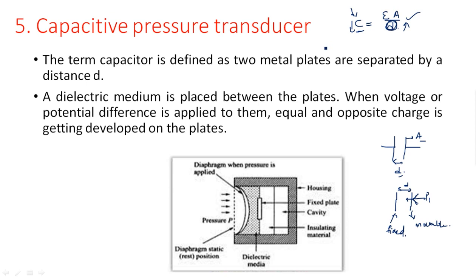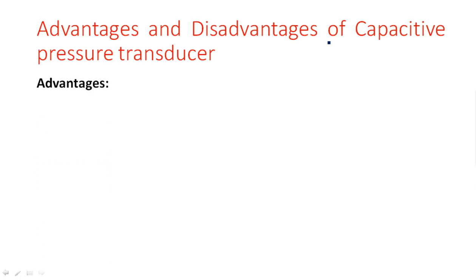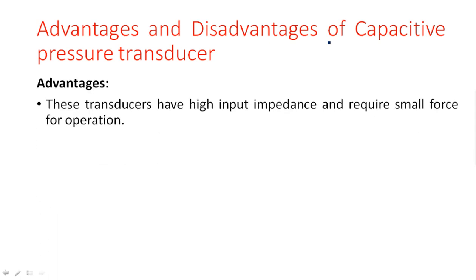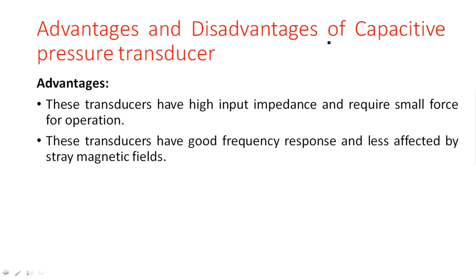Advantages of capacitor transducer: these transducers have high input impedance and require very small force for operation, as the plate movement is minimal. They have good frequency response and are less affected by stray magnetic fields, because no inductance is used.